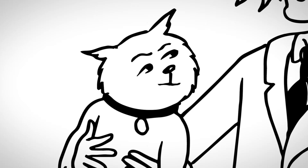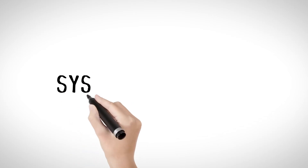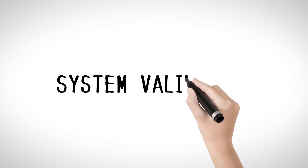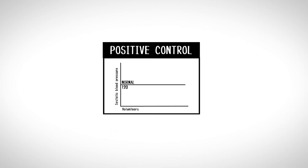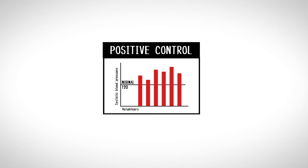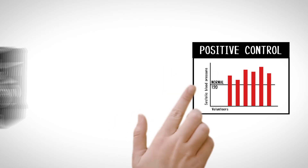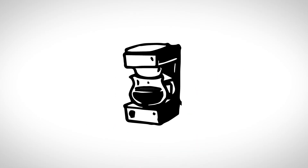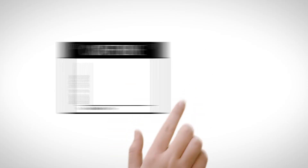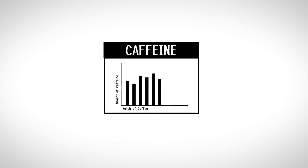It seems like you haven't validated your system. System validation is performed to make sure that the system being used is capable of addressing your experimental question. This is the process of making sure that potential positive controls are validated for later use, and that reagents are tested for specificity, potency, and capability. Every aspect of an experiment needs to be validated.